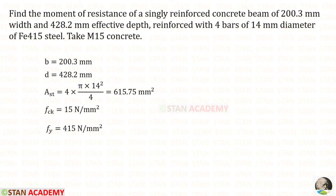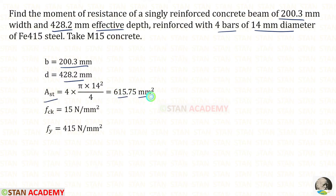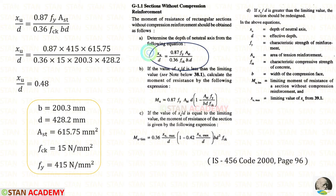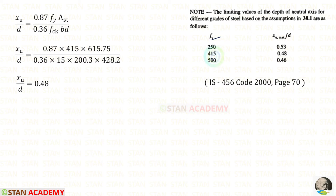For the second problem, B = 200.3 mm, effective depth D = 428.2 mm, reinforcement is 4 bars of 14 mm diameter, giving AST = 615.75 mm². FCK = 15, FY = 415. Applying all values, for XU/D we get 0.48.